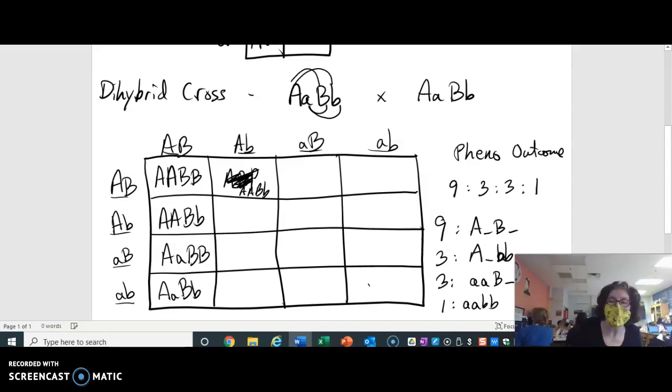and 1 that is completely recessive, 1 little guy, this one right here actually is the 1 where that 1 possible 1/16th of an offspring is going to have both recessive traits showing. So that's how you do a cross with two traits, and that's how it differs from a cross with one trait.